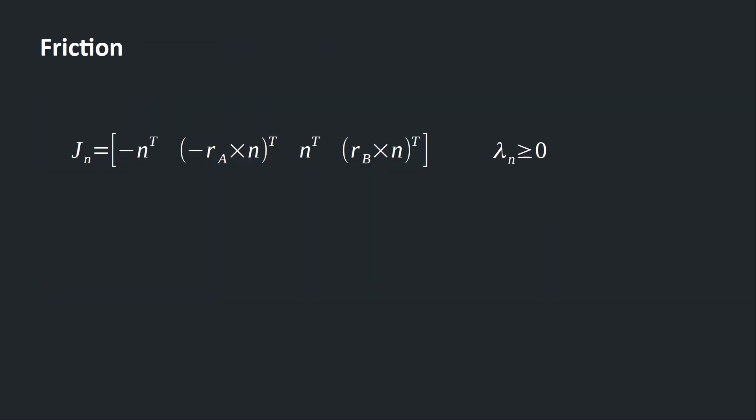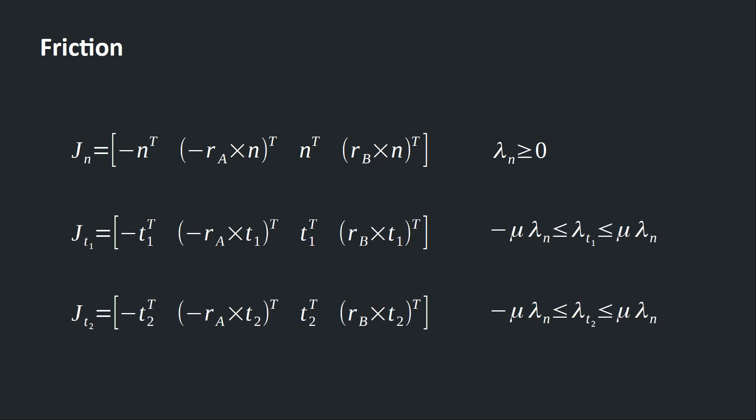Finally, let's look at friction. The Jacobian we derived is for eliminating relative speed along the contact normal vector. Friction is basically a similar concept. We want to eliminate relative velocity in the direction of the contact tangents. So the Jacobian for friction is basically the same. We just replace the contact normal with the two contact tangent vectors.